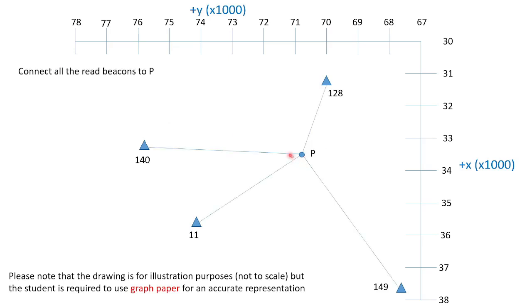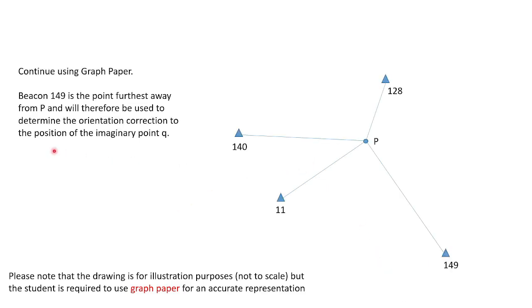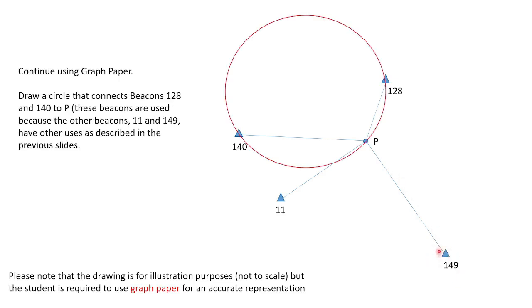You draw your P into the middle point, then connect all of your beacons to P. These directions are supposed to be plus or minus the average directions that you observed. We're going to use beacon 149 for the orientation because it is the furthest one. We've decided to use beacons 140 and 128. We can also do it with 11 and 140 if we want to, but this will be much easier. We're going to use these and draw a circle that connects them together.